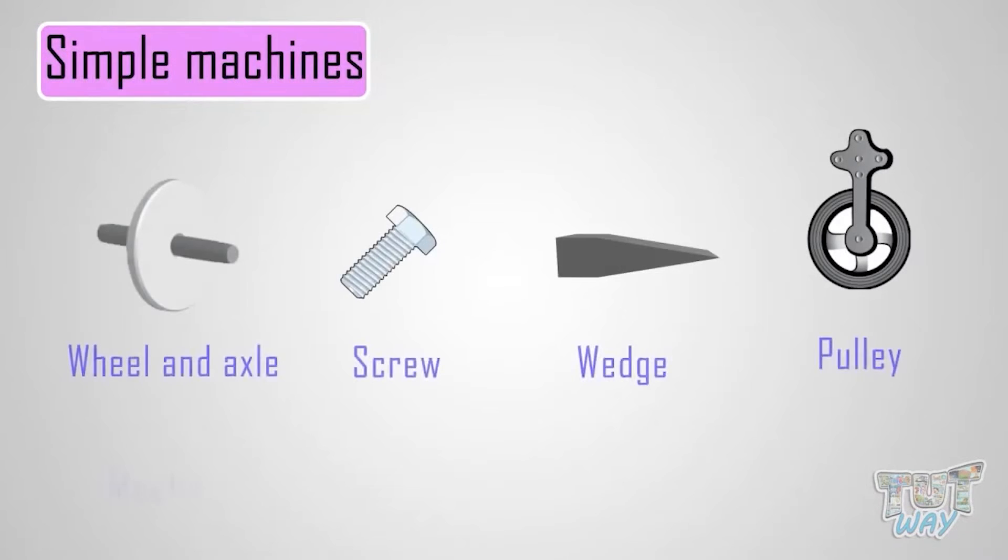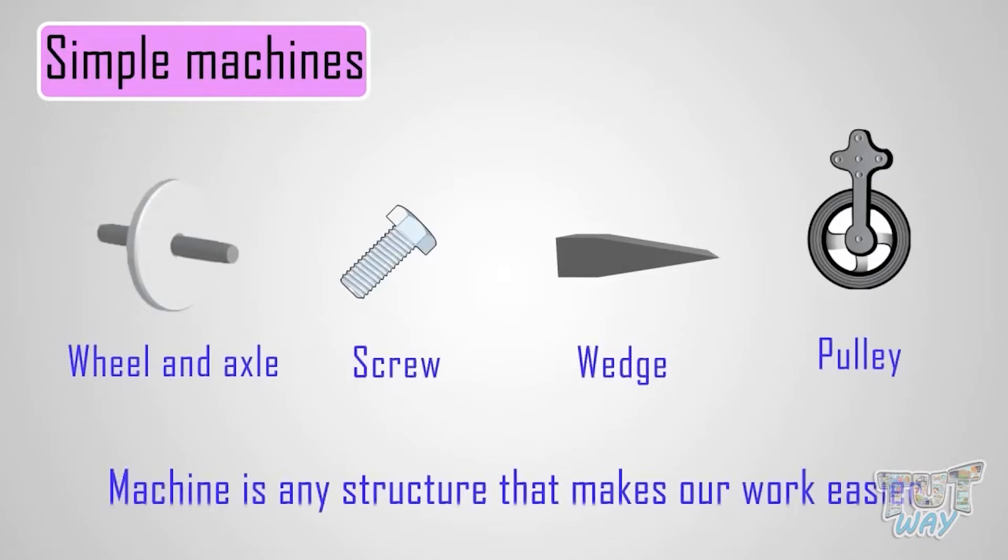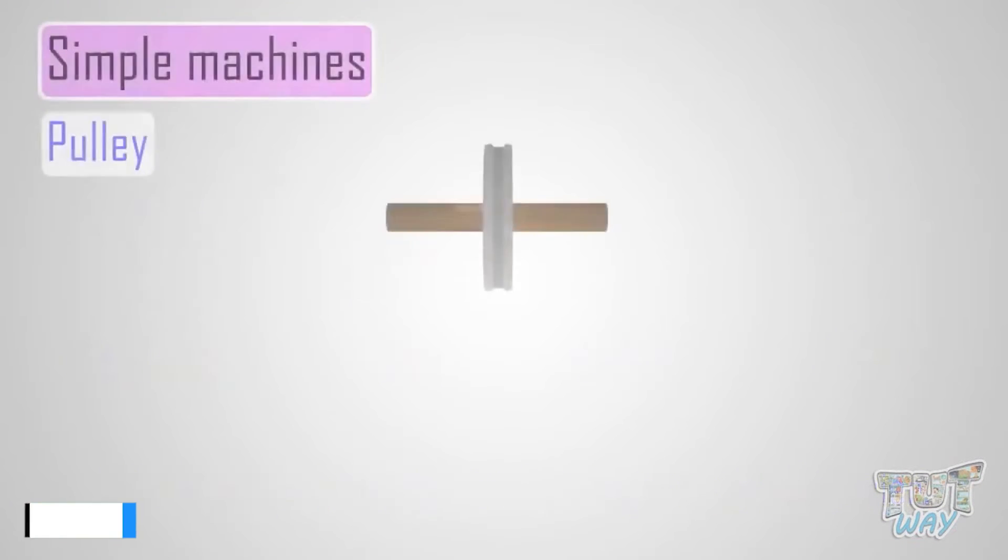Simple machines. So let's get started kids. We know a machine is any structure that makes our work easier. Our work takes less time and less energy if we use some machines for it. And here is another simple machine.